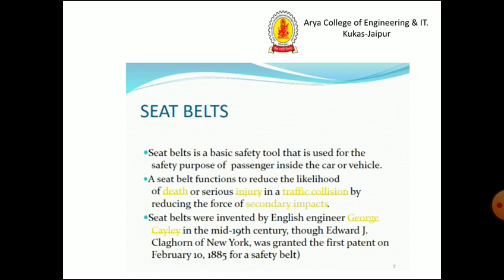The next safety device is seatbelts. A seatbelt is a basic safety tool used for the safety of passengers inside a car or vehicle. A seatbelt functions to reduce the likelihood of death or serious injury in a traffic collision by reducing the force of secondary impacts.